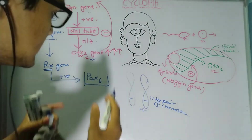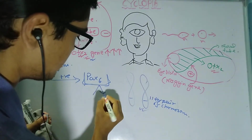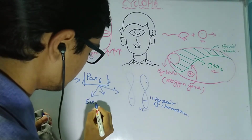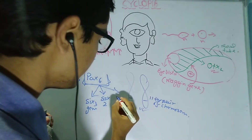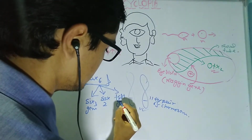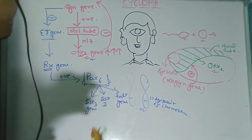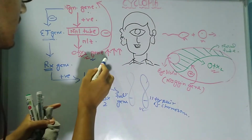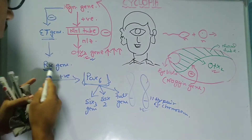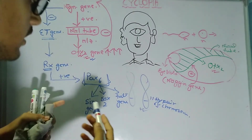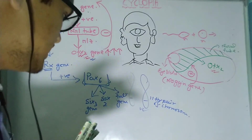When the Pax6 gene is activated by the RX gene, it starts to secrete the 6-3 gene, SOX2 gene, and the DOL gene, along with multiple other genes. So the full cascade is: OTX2 inhibits Nogin → Nogin can no longer inhibit ET gene → ET gene produces RX gene → RX gene stimulates Pax6 gene → Pax6 releases 6-3, SOX2, DOL, and multiple other genes.